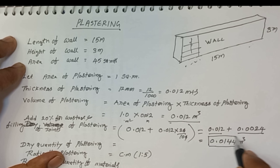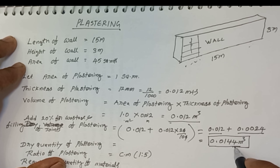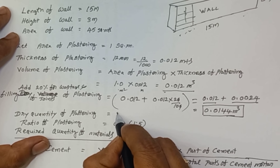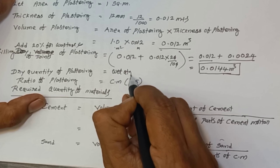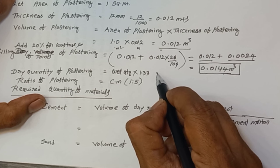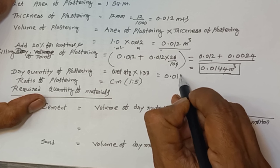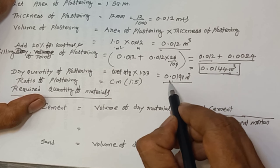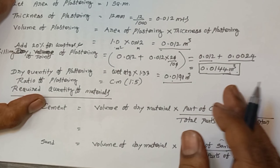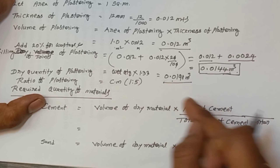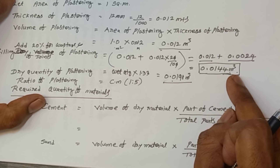This wet quantity is 0.0144 m³, but we need to convert this to dry quantity. We multiply the wet quantity by the coefficient 1.33. So 0.0144 × 1.33 = 0.0191 m³. This is the dry quantity of materials — cement and sand combined — which is 0.0191 m³.